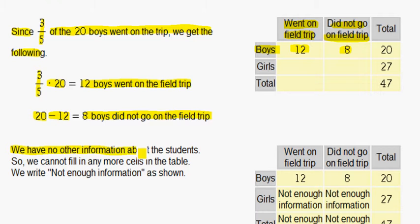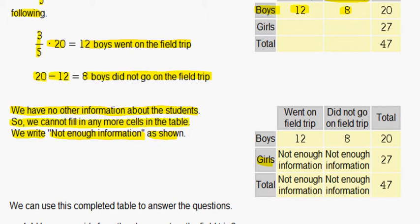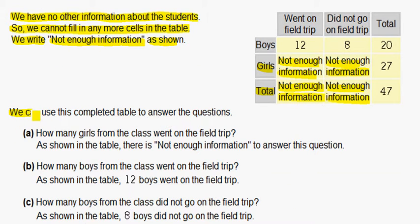We have no other information about the students, so we cannot fill in any more cells in the table. We write not enough information as shown. For the girls, we can write not enough information. If we don't have the girls, we can't have a total, so we can write not enough information for those. We can use this completed table to answer the questions.